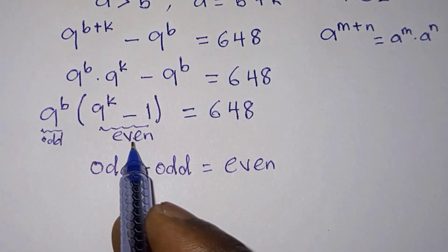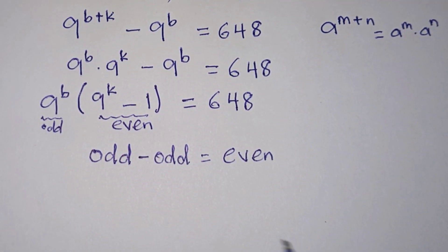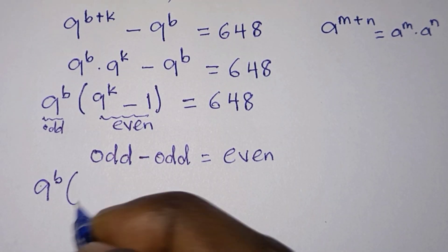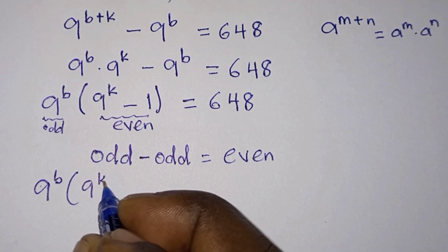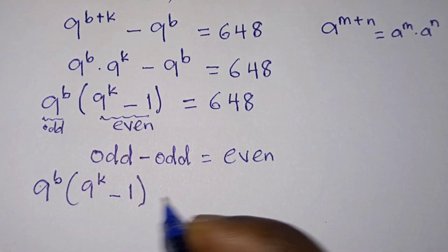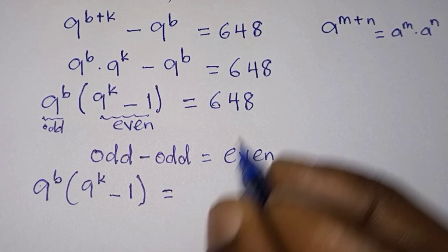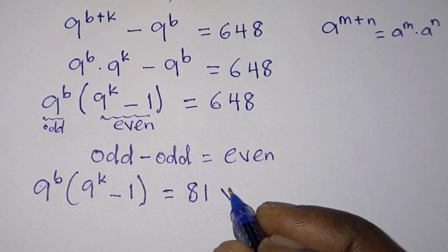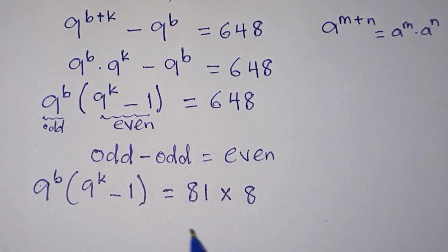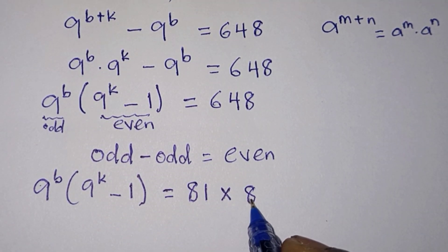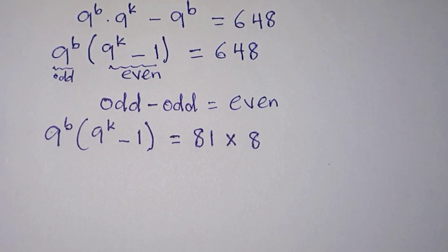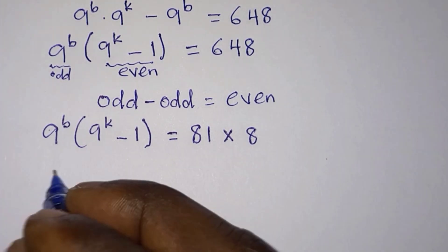We need the right hand side to reflect the same structure. So 648 can be written as 81 times 8. We see that 81 is odd and 8 is even, just like we have on the left. So we can equate odd to odd and even to even, giving us two equations.